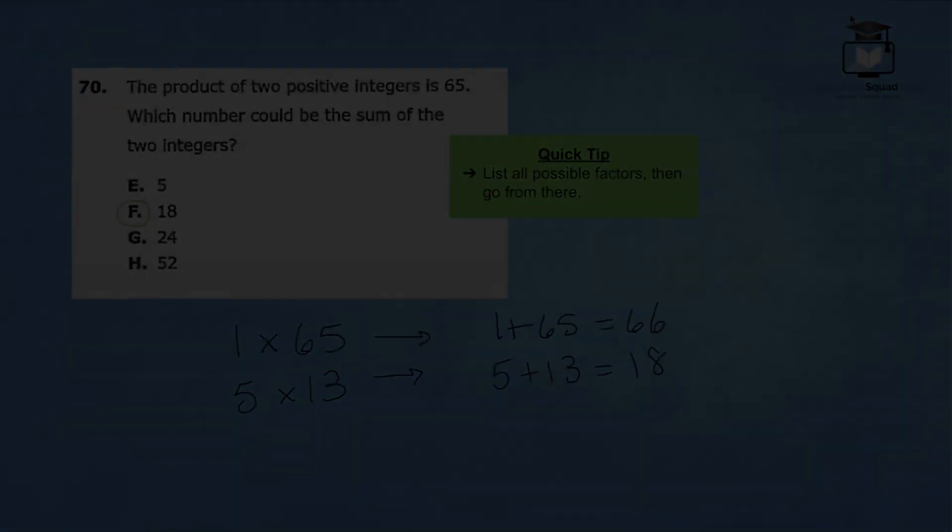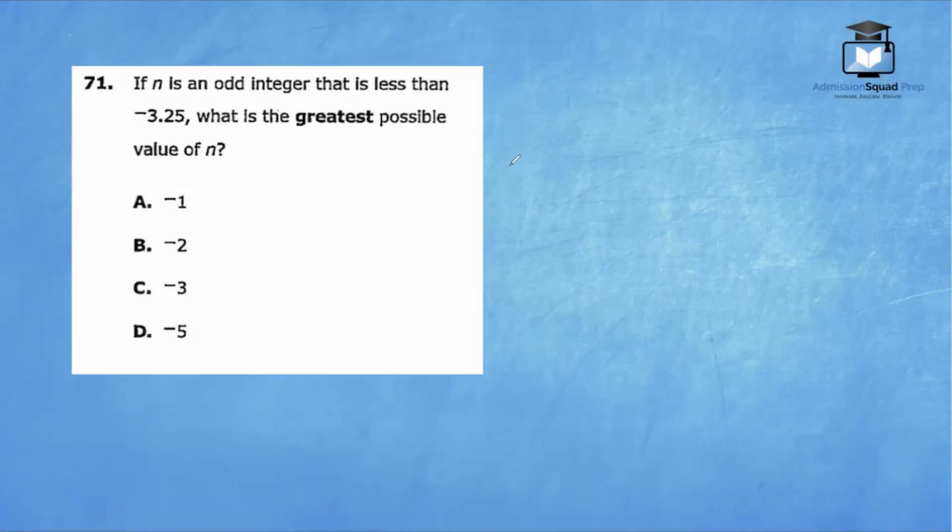Let's check out question 71. Question number 71. If n is an odd integer that is less than negative 3.25, what is the greatest possible value of n? For these types of problems, I like to go ahead and create a number line for myself so I can visualize exactly what is going on. Let's add a scale. Now that we have our number line, let's identify where negative 3.25 is located. It would be somewhere in between negative 3 and negative 4. So we would put it right over here.